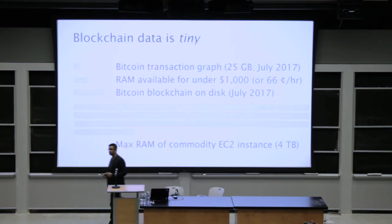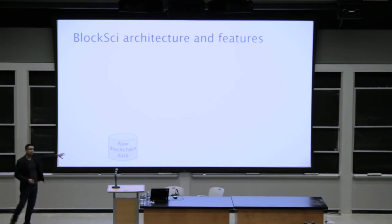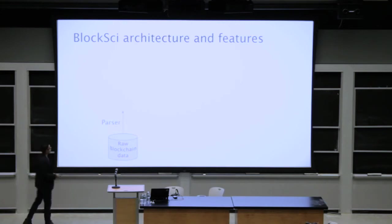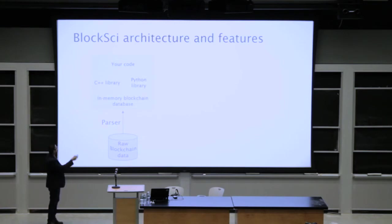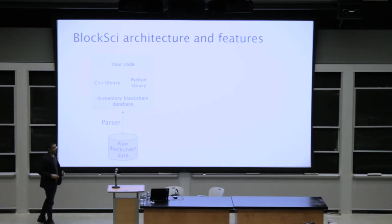Here's how BlockSci is architected. It takes raw blockchain data from a variety of different blockchains and parses it for you, storing it in an in-memory blockchain database. That's the key — it's an in-memory database, which leads to huge performance benefits. On top of that, we've built a C++ library as well as a Python library for most common blockchain analysis tasks.